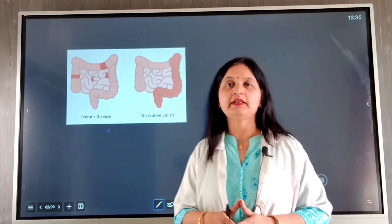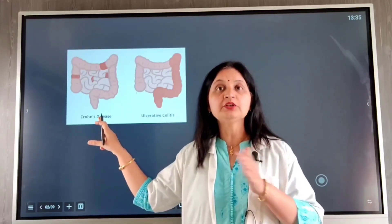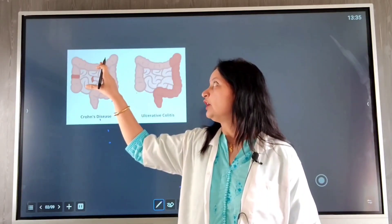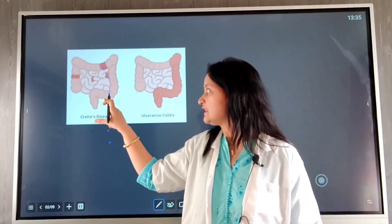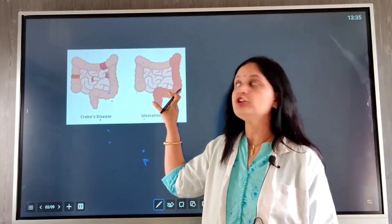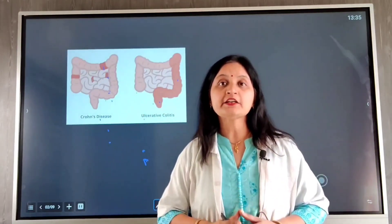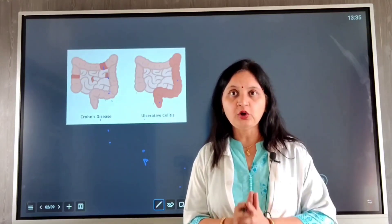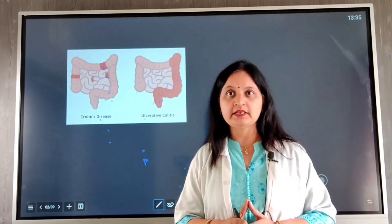What are the sites of involvement in ulcerative colitis and Crohn's disease? In Crohn's disease, any part of the bowel can be involved from the mouth to the anus, but it typically involves the terminal ileum and the colon in segmental or patchy areas. In ulcerative colitis, the inflammation starts in the rectum and continues into the colon as continuous involvement. So the common sites are the terminal ileum, colon, and rectum — the distal GI tract.